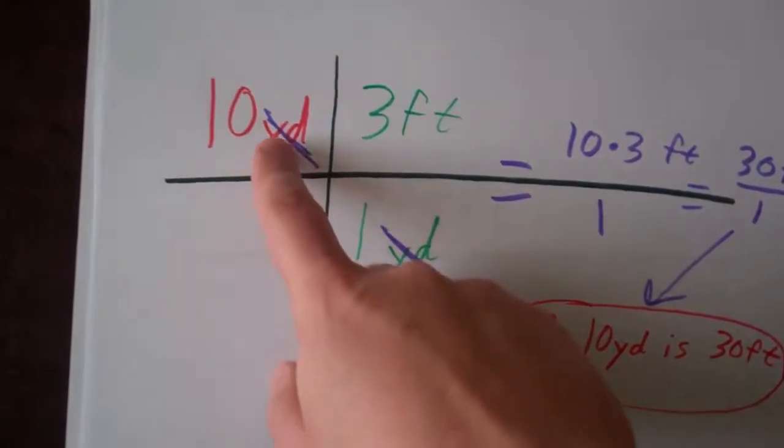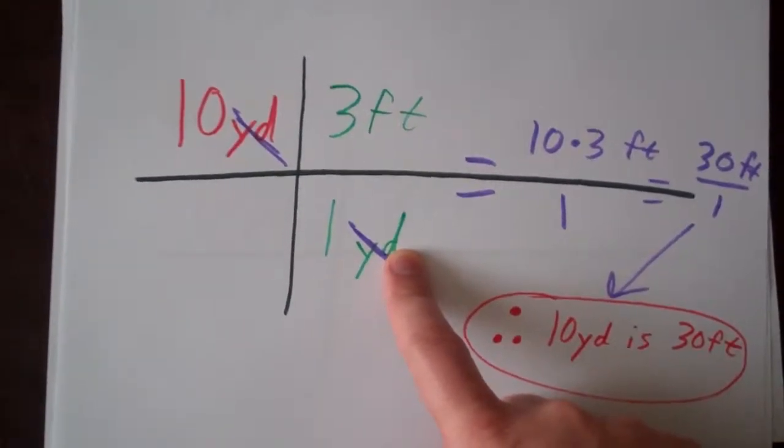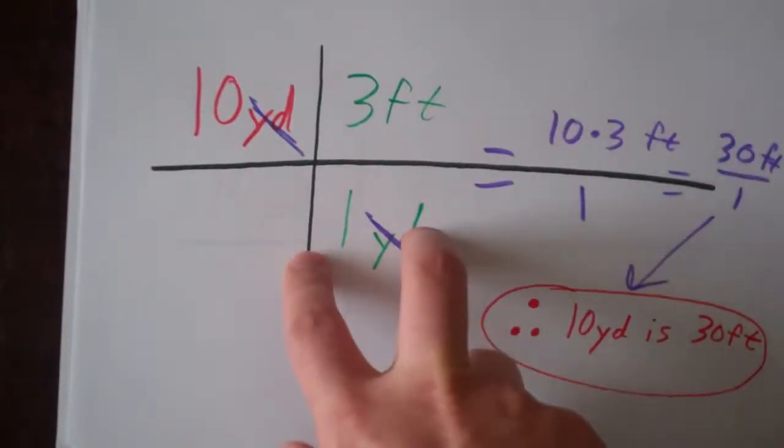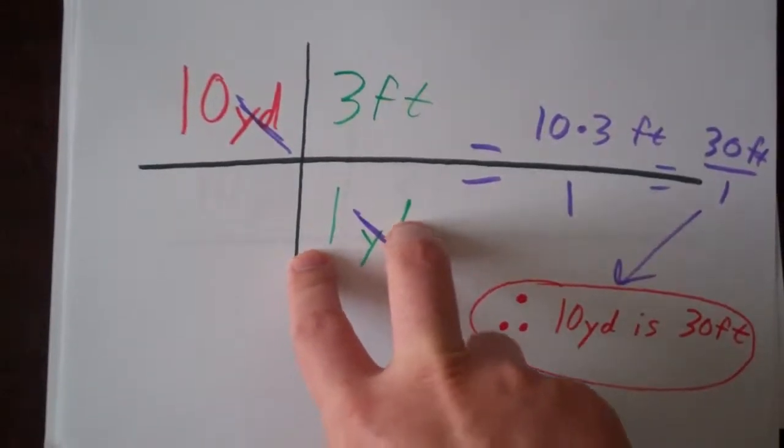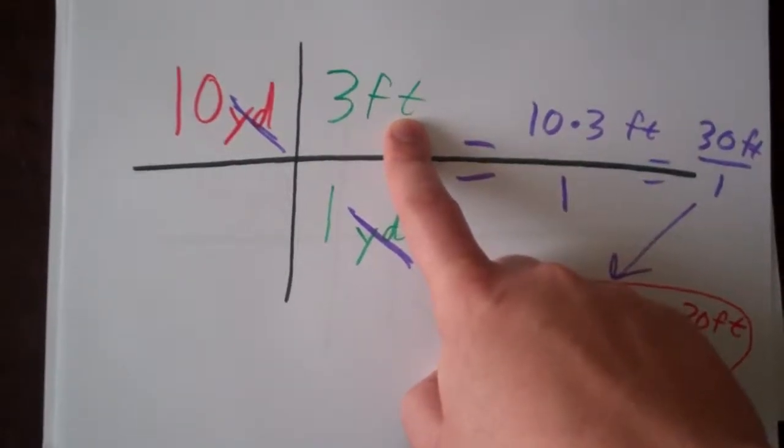When we do this, this helps us divide out. Yards divide out with yards. If we had these both in the numerator or both in the denominator, they wouldn't divide out. When we divide yards by yards, all we're left with is feet.